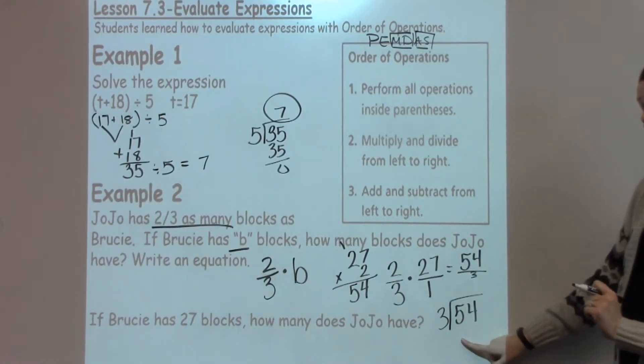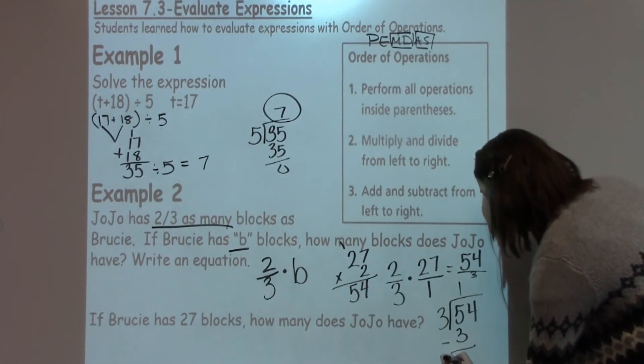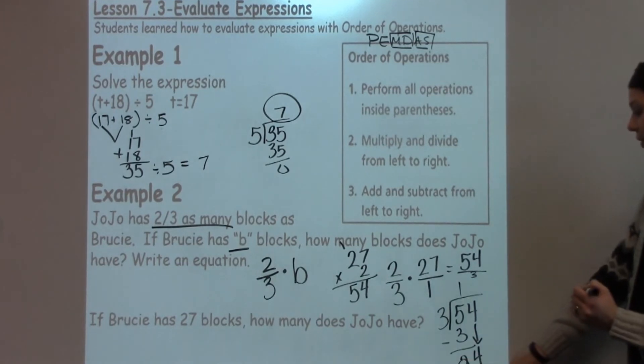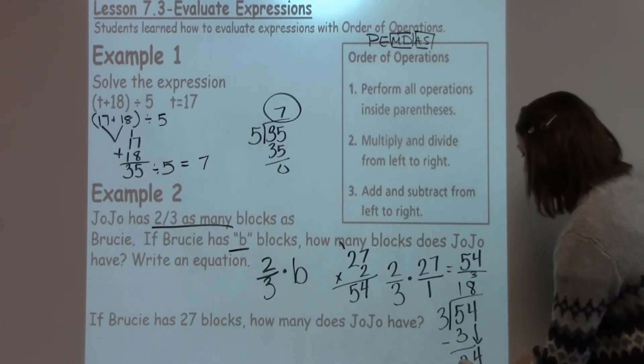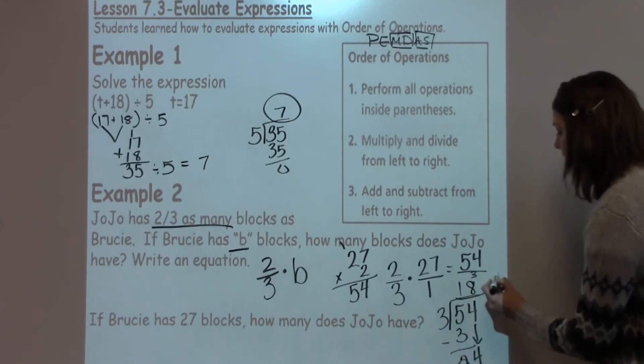Can 3 go into 5? It can go in there one time. 1 times 3 is 3. I've got 2 left over. Bring down my 4. Can 3 go into 24? It can go in there 8 times. 3 times 8 is 24 for a final answer of 18.